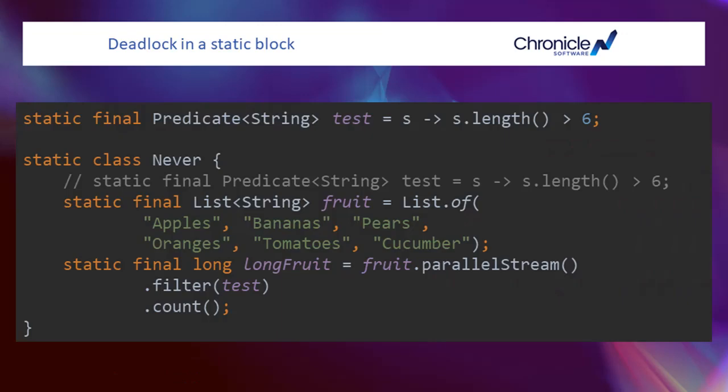When a class is initialized, a thread holds an internal lock on that class, which prevents other threads from accessing it until the class has been initialized.